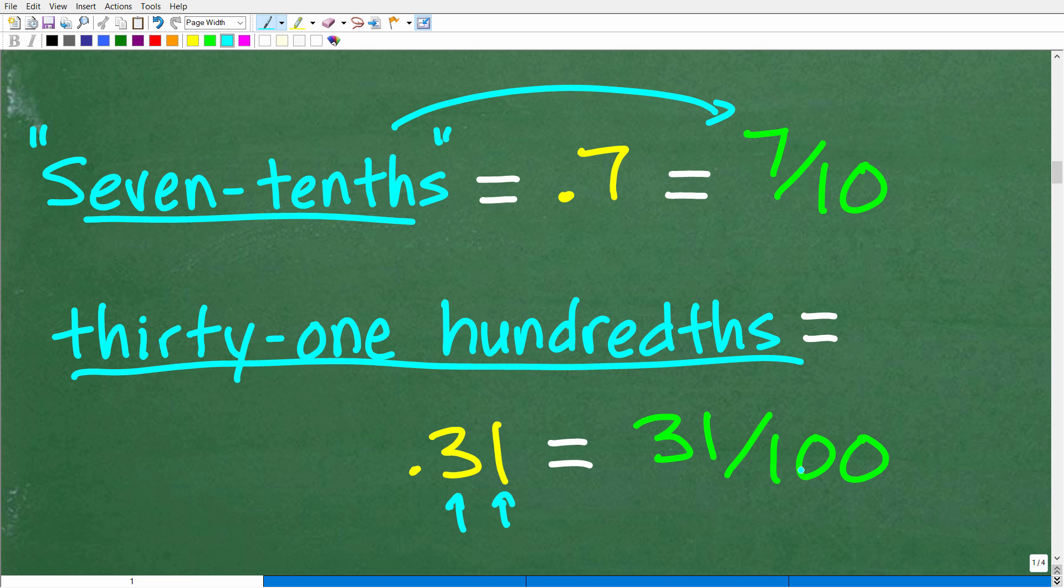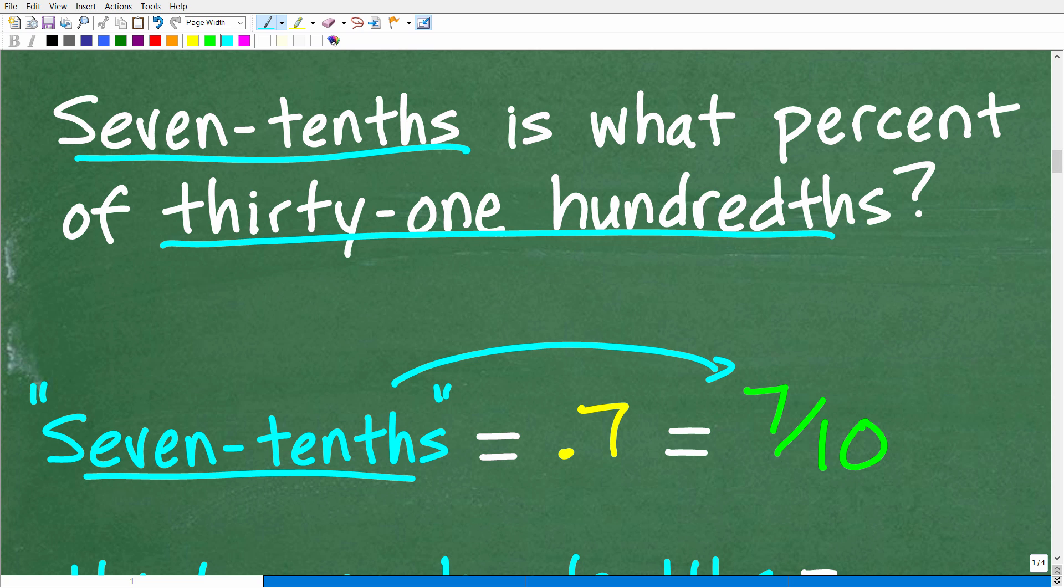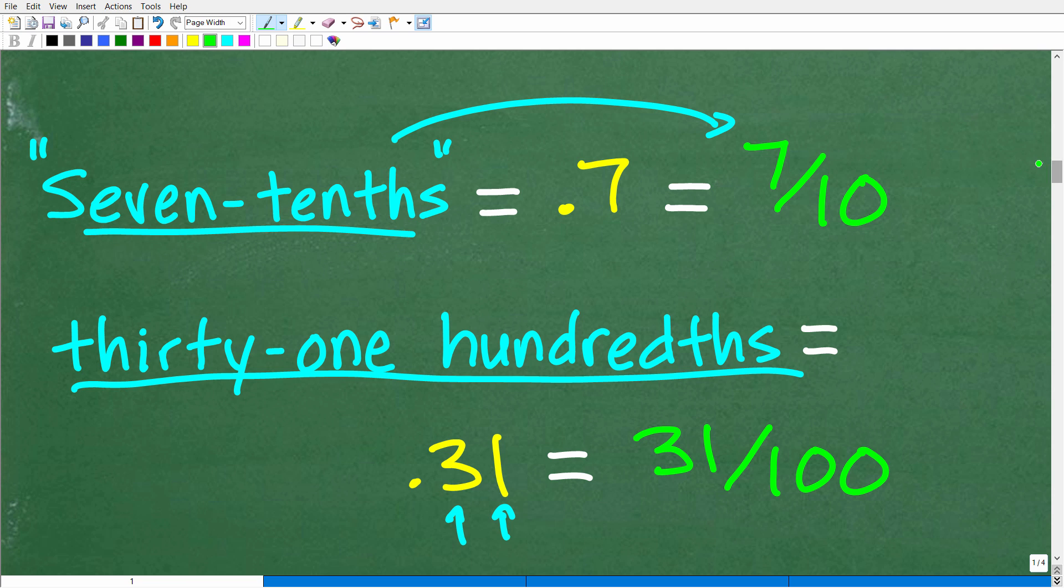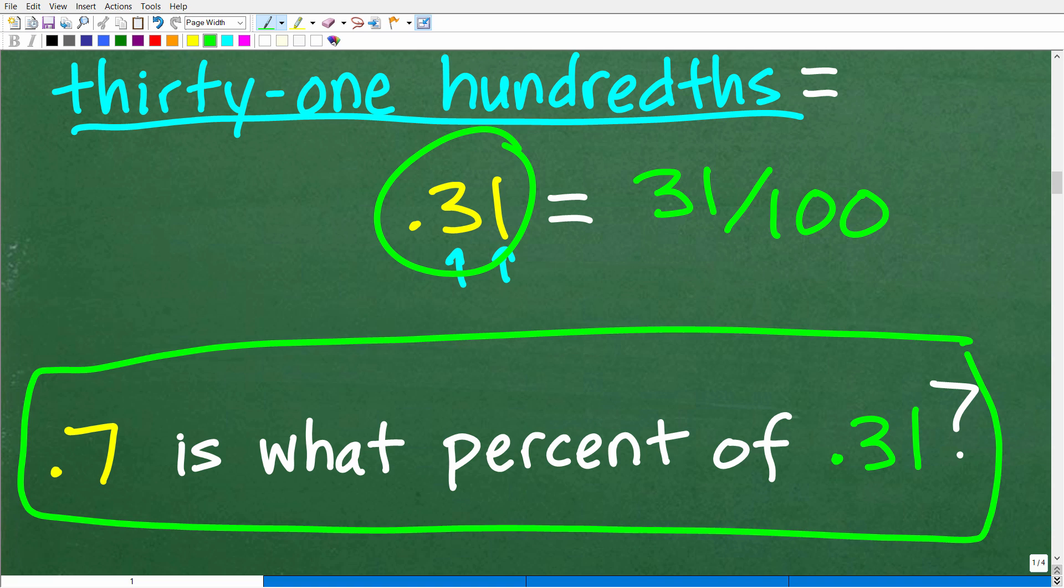So, now we have to make a determination here. We have to go back to our problem. And we're going to have to put in some actual numeric values. We can choose to work with fractions or we can choose to work with decimals. Because we are going to be using our calculators, and you don't have to use your calculator, but you should use it, it's just going to make our life a lot easier, I'm going to choose to work with decimals. So, we're going to rewrite the problem this way: 0.7 or seven tenths is what percent of 0.31 or 31 hundredths.